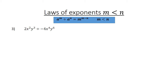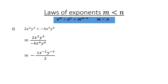More examples. 2x to the power of 2, y to the power of 3 divided by negative 4, x to the power of 4, y to the power of 6 equals. Rewrite it in this form and start with your division. Positive divided by negative is negative. 2 divided by 4 is 1 over 2. x to the power of 2 divided by x to the power of 4 equals x to the power of negative 2. y to the power of 3 divided by y to the power of 6 equals y to the power of negative 3, giving negative 1 over 2.